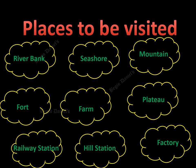What are the places to be visited? We can visit any place from which we can get ideas, knowledge, and information. Places like a riverbank, seashore, mountain, fort, farms, plateau, railway station, hill station, factory, bus depot, bank, schools, malls, theatres, and so on.